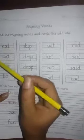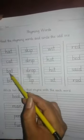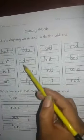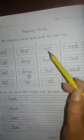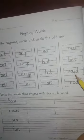So students, today here we learn about the rhyming words. Read the rhyming words and circle the odd one. So students start reading: hat, cat, bat, bit, skip, drip, drop, lip, wit, hot, hit, sit, red, bad, sad, road.